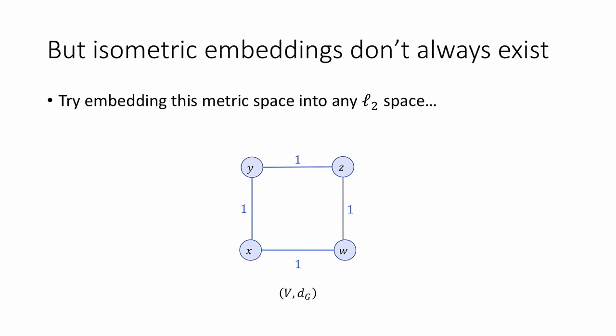Okay, so that was the good news. We can always isometrically embed anything we want into L∞. However, there is some bad news, and the bad news is that isometric embeddings don't always exist into any target space we like.